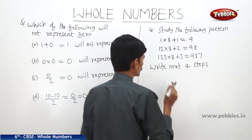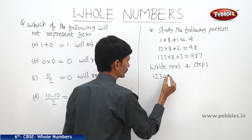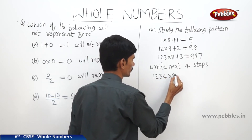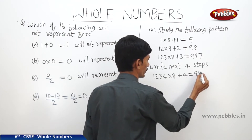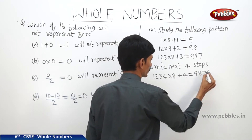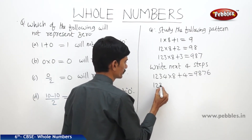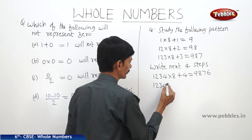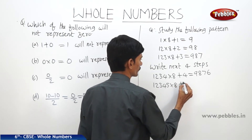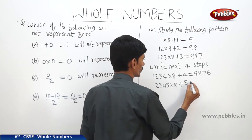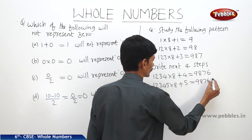The next step is 1234 into 8 plus 4 equals 9876. The step after that is 12345 into 8 plus 5 equals 98765.